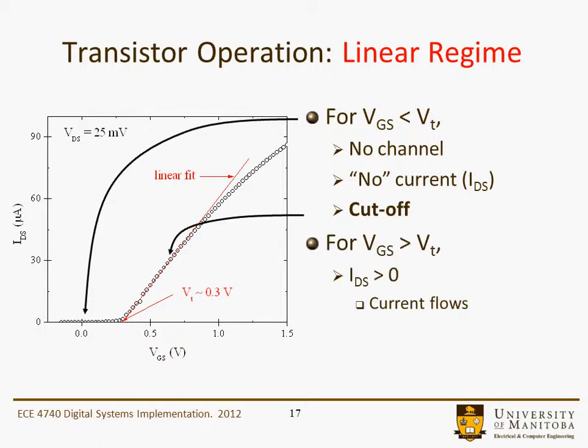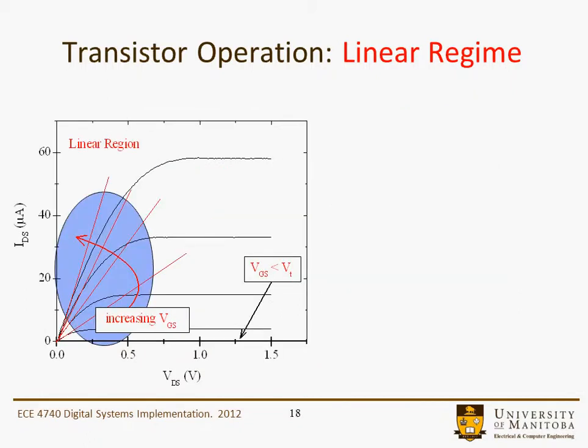In the linear region, we have VGS greater than VT, and drain current does flow. You can see why the graph sort of looks like a linear fit — ID versus VGS. But I don't think that's why they call it the linear region. The figure would be very similar for the P-type device, except it would be in the third quadrant as opposed to the first quadrant, and that would be just a convention.